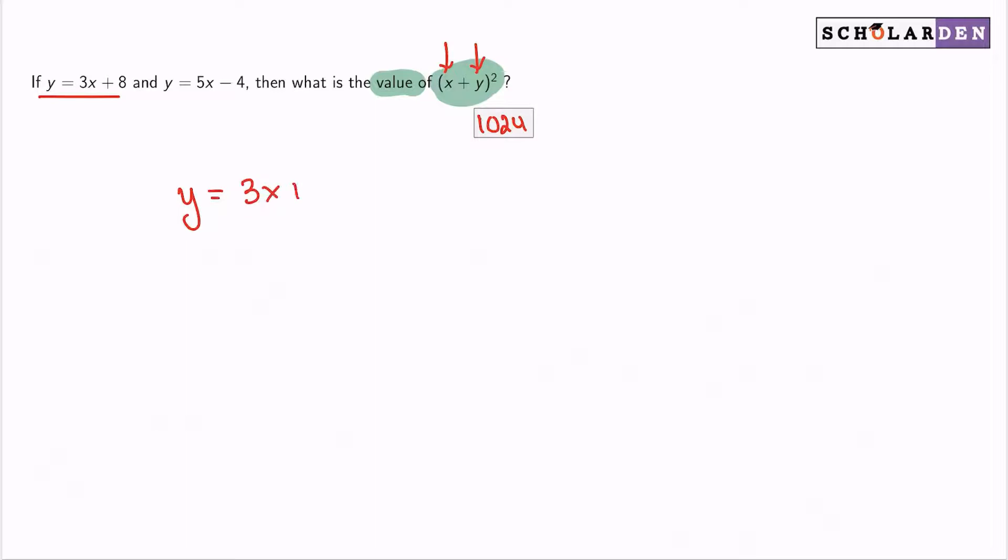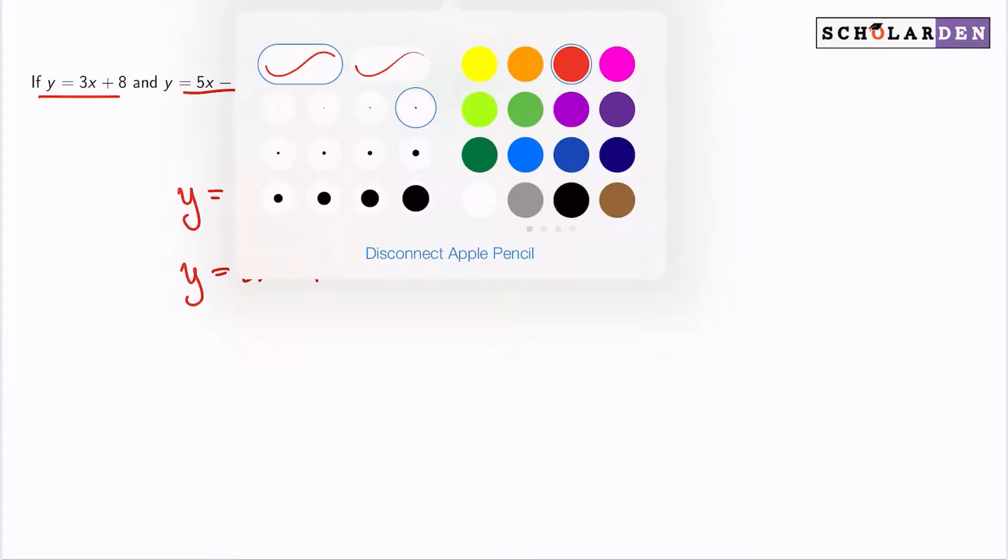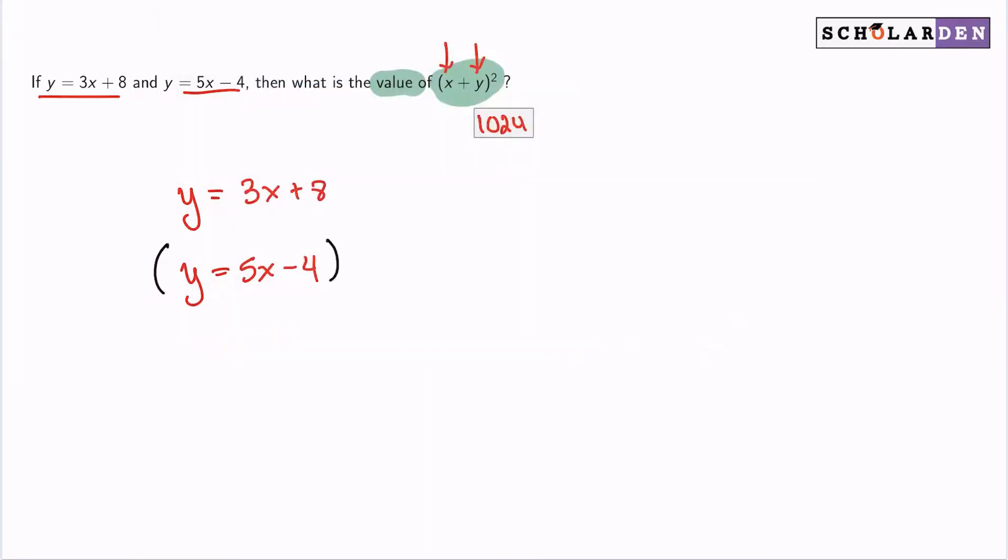y equals 3x plus 8 and y equals 5x minus 4, what we can do here is we can go ahead and combine these equations by subtracting. So here's what I mean. If I subtract one from the other, then the y's will eliminate.